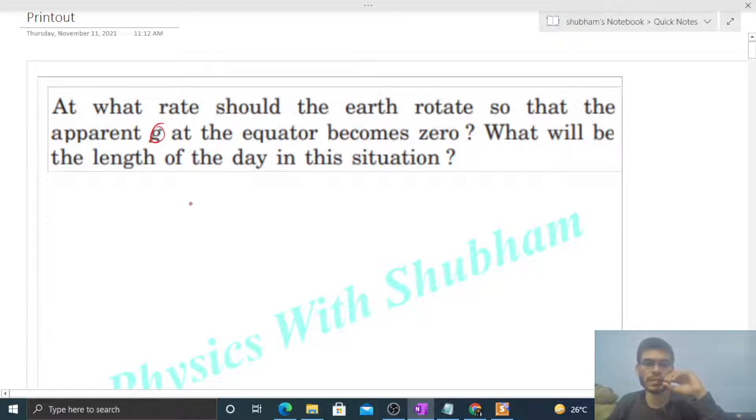So let's say we have this Earth with mass capital M and radius capital R, and the value of acceleration due to gravity at the surface of Earth is small g. Now this Earth rotates about its axis with some angular speed omega.